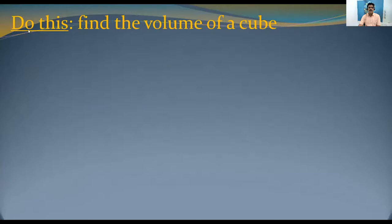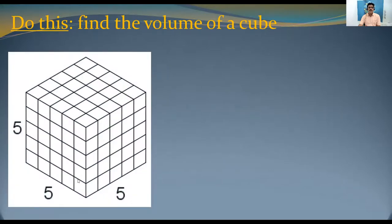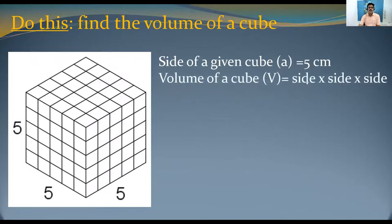Okay now. So, do this. Find the volume of a cube. I am giving a cube here. You have to find the volume of a cube. This, see this is a cube. 5, 5, again 5. All the length, breadth, height are equal. So, that's why it is a cube. Let us take, what we have to find out? Volume. So, side of a cube is given, that is 5 centimeter. This is the given cube. So, side of a given cube, 5 centimeter. Volume of a cube, V is equal to, formula, side into side into side. So, a into a into a, that is, a value 5. So, 5 into 5 into 5. That is, 125 cubic centimeters.